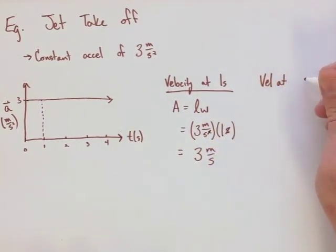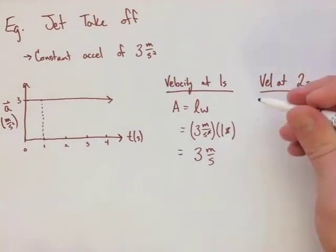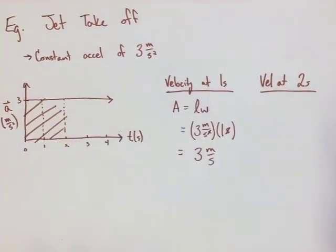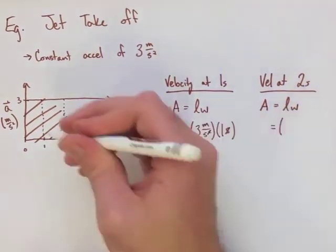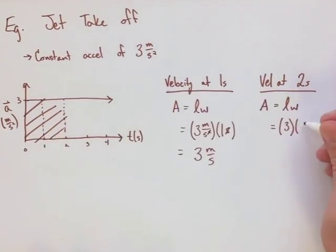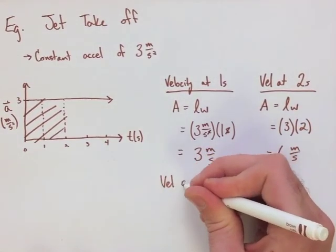We're going to do the same process for all four of our values. We're going to look at 2 seconds now. We have length times width again. We have 3 meters per second squared times 2 seconds. So, this now equals 6 meters per second.